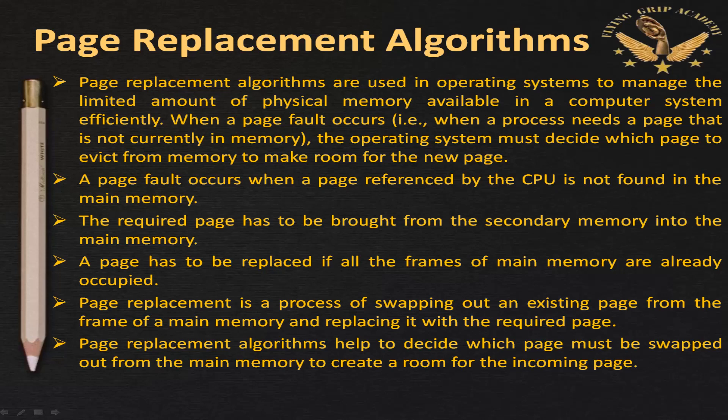This technique is most efficiently used in cache memory. The required page has to be brought from secondary memory (hard disk) into main memory. A page has to be replaced if all the frames of main memory are already occupied. Page replacement is a process of removing an existing page from the frame of main memory and replacing it with the required page. Page replacement algorithms help decide which page must be swapped out to create room for the incoming page.